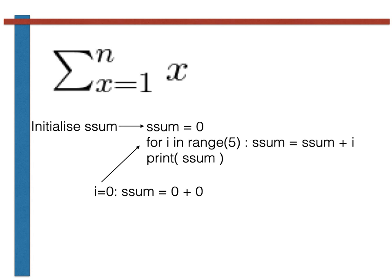We then go back to the start of the loop. In the second pass through the loop, i equals 1. And we thus set ssum equal to ssum, which is 0, and we add to that i, which is 1, and thus get 1.